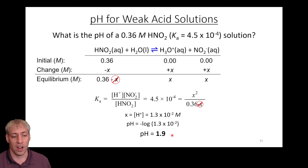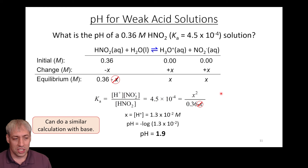You can do similar calculations with bases. Use the Kb value to figure out OH- concentrations, find pOH, then pH = 14 minus pOH, and so on.